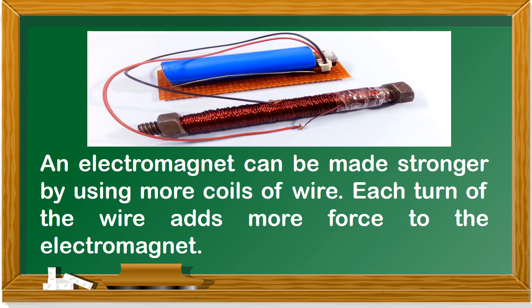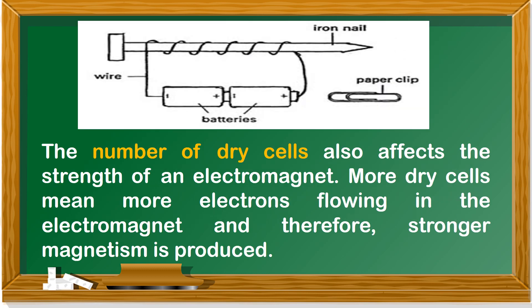An electromagnet can be made stronger by using more coils of wire. Each turn of the wire adds more force to the electromagnet. The number of dry cells also affects the strength of an electromagnet. More dry cells mean more electrons flowing in the electromagnet and therefore stronger magnetism is produced.